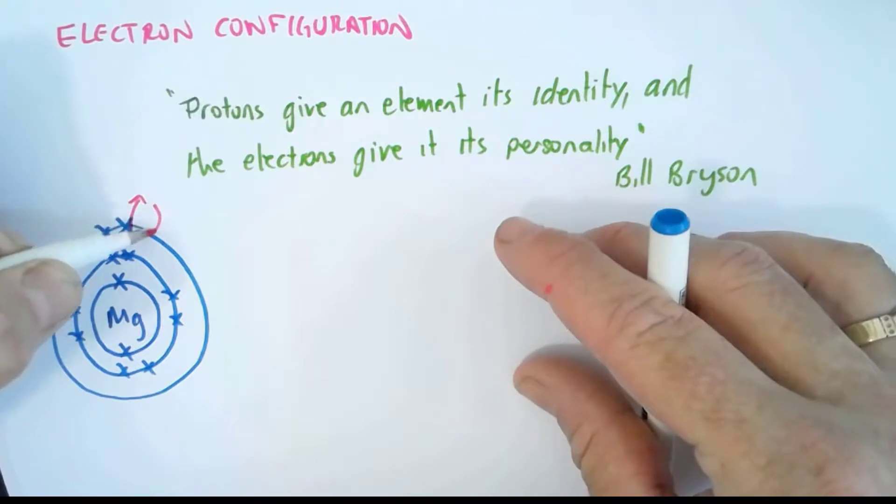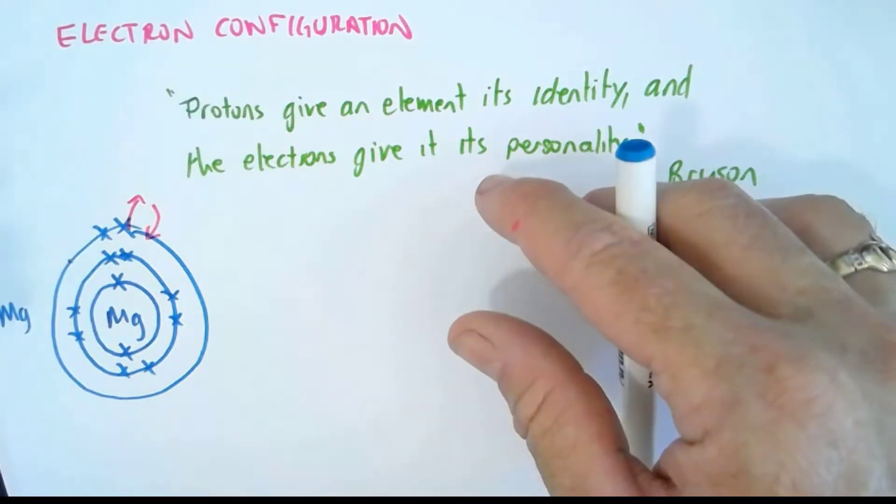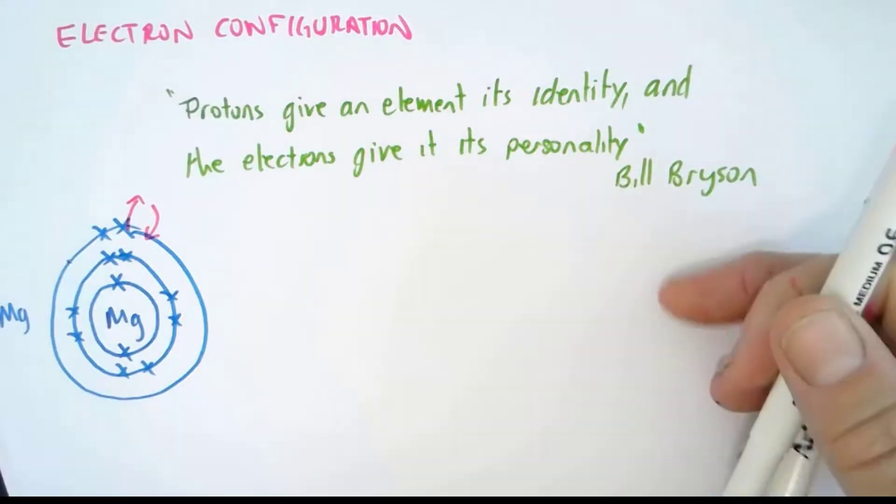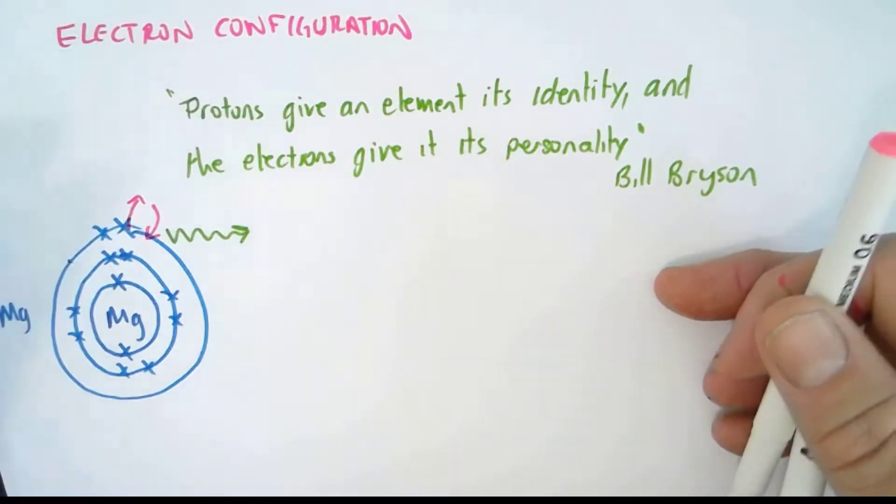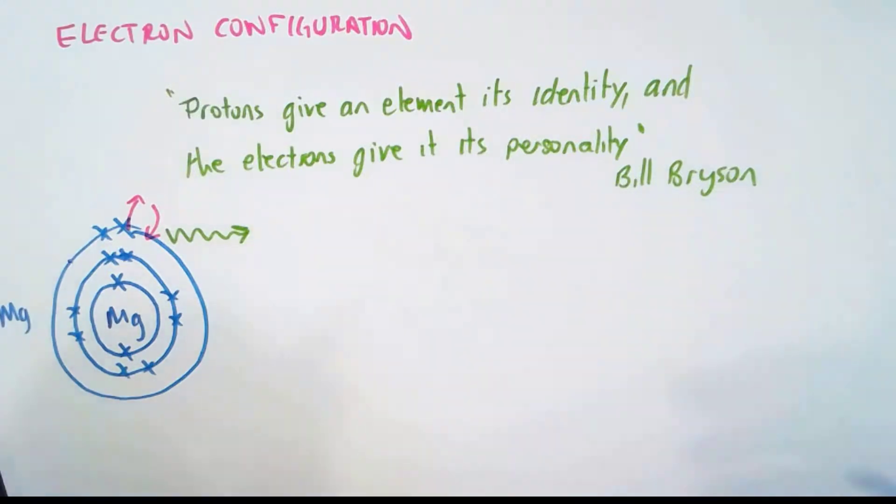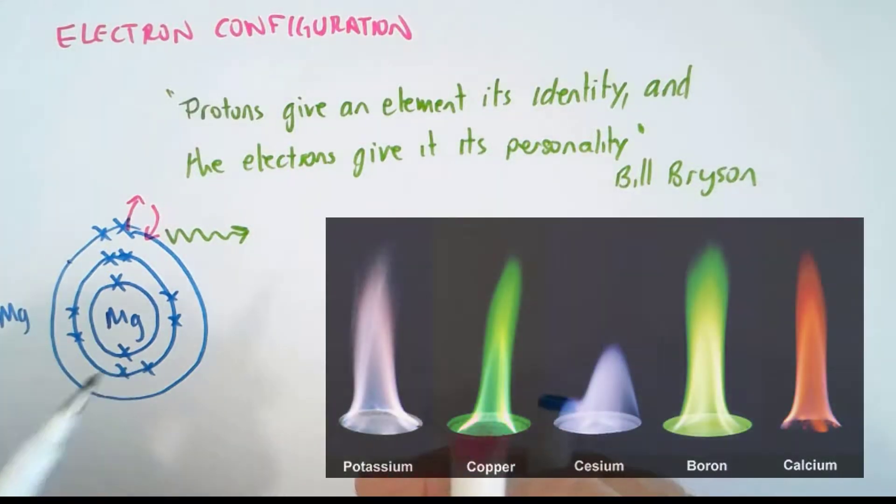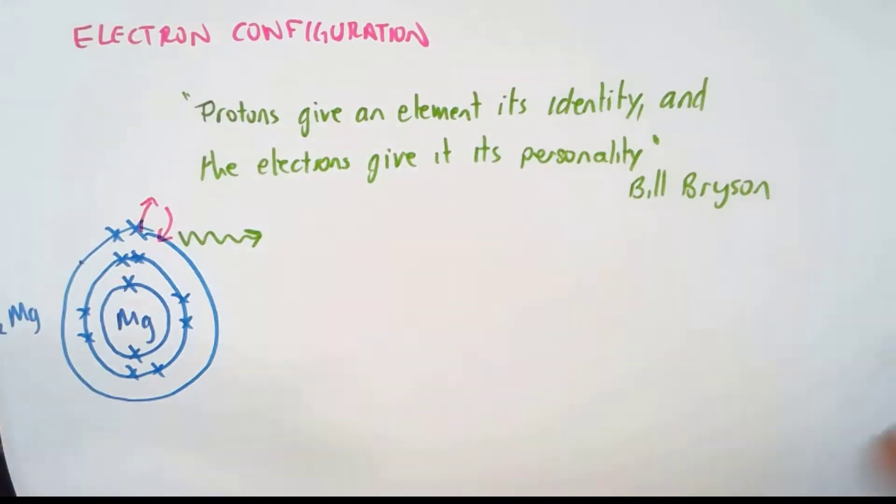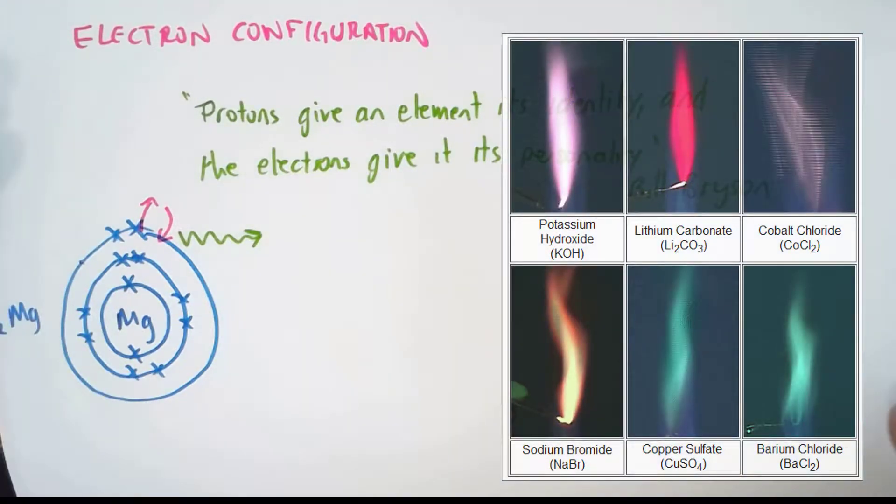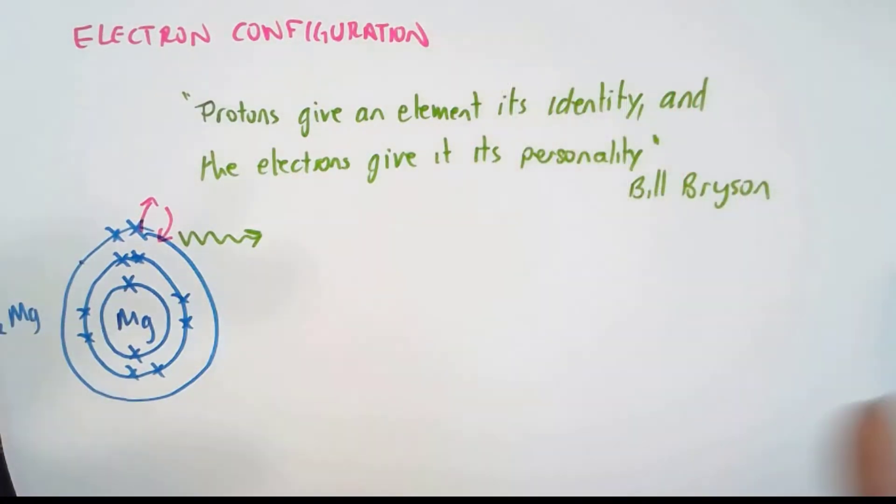When they drop back down to their normal resting state, they release that energy again, in the form of light. And that particular color of light is specific to a particular element. So one way that we can tell what element it is, is by heating it up and doing a flame test. So that's how fireworks work. The reason you get different color fireworks is because of using different elements and different compounds.